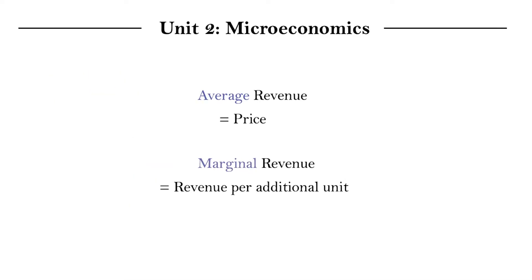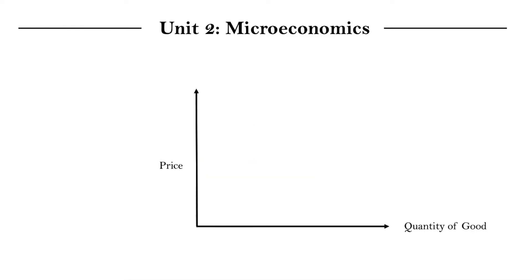And now that we touched on average revenue, which was equal to price, and marginal revenue, which was just revenue per additional unit, I want us to try and plot these out as a curve. And this time, I want to have my axes as price and quantity of good. And let's think about how we would plot out average revenue, which was just equal to price.